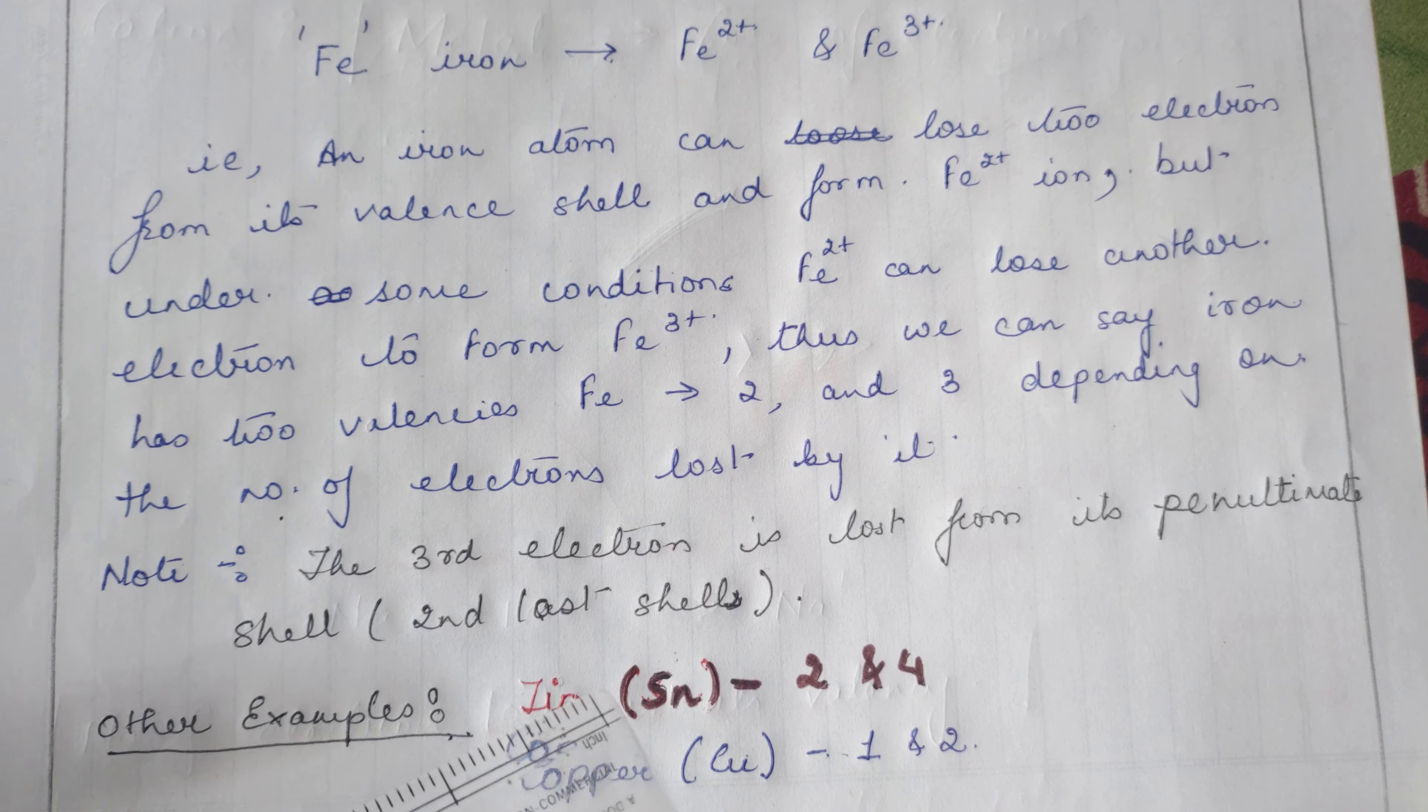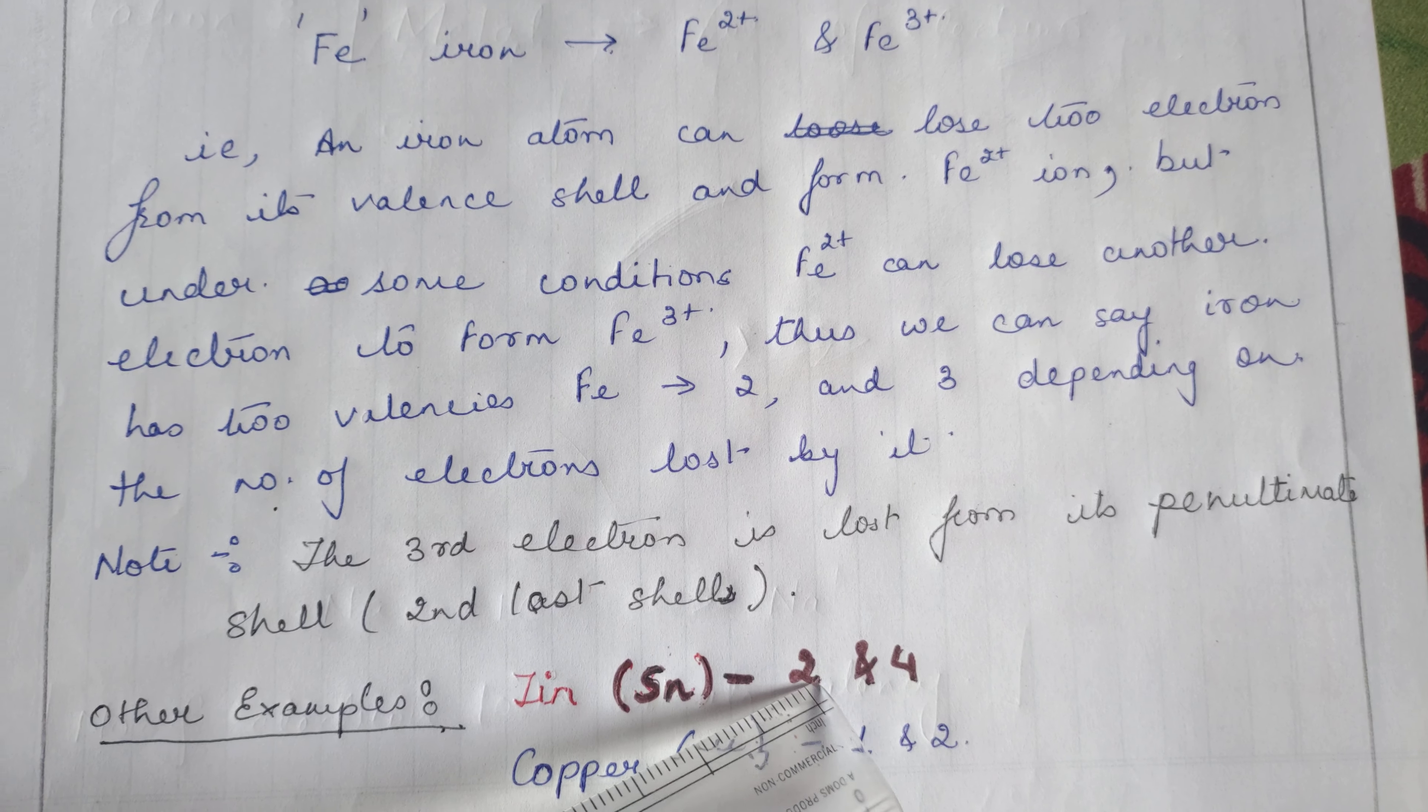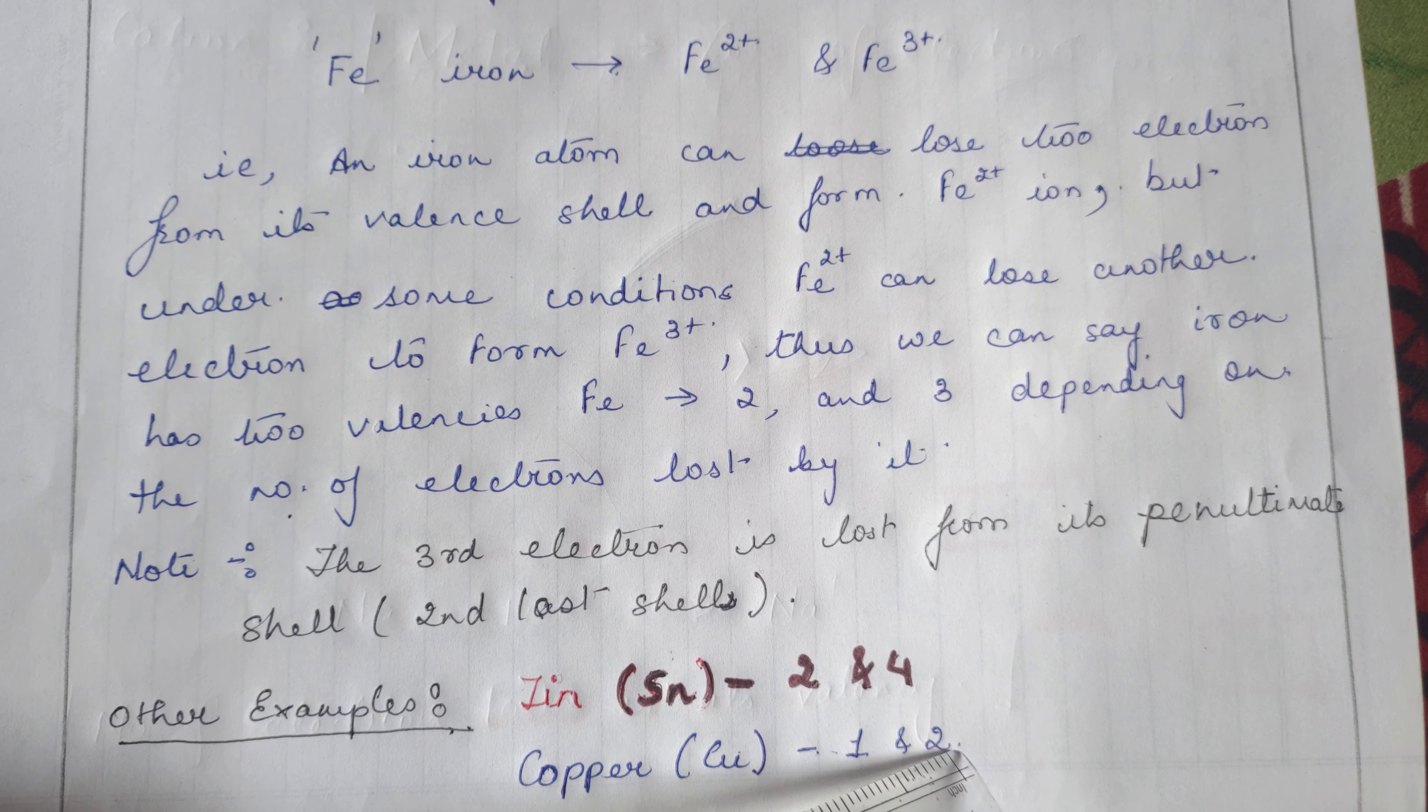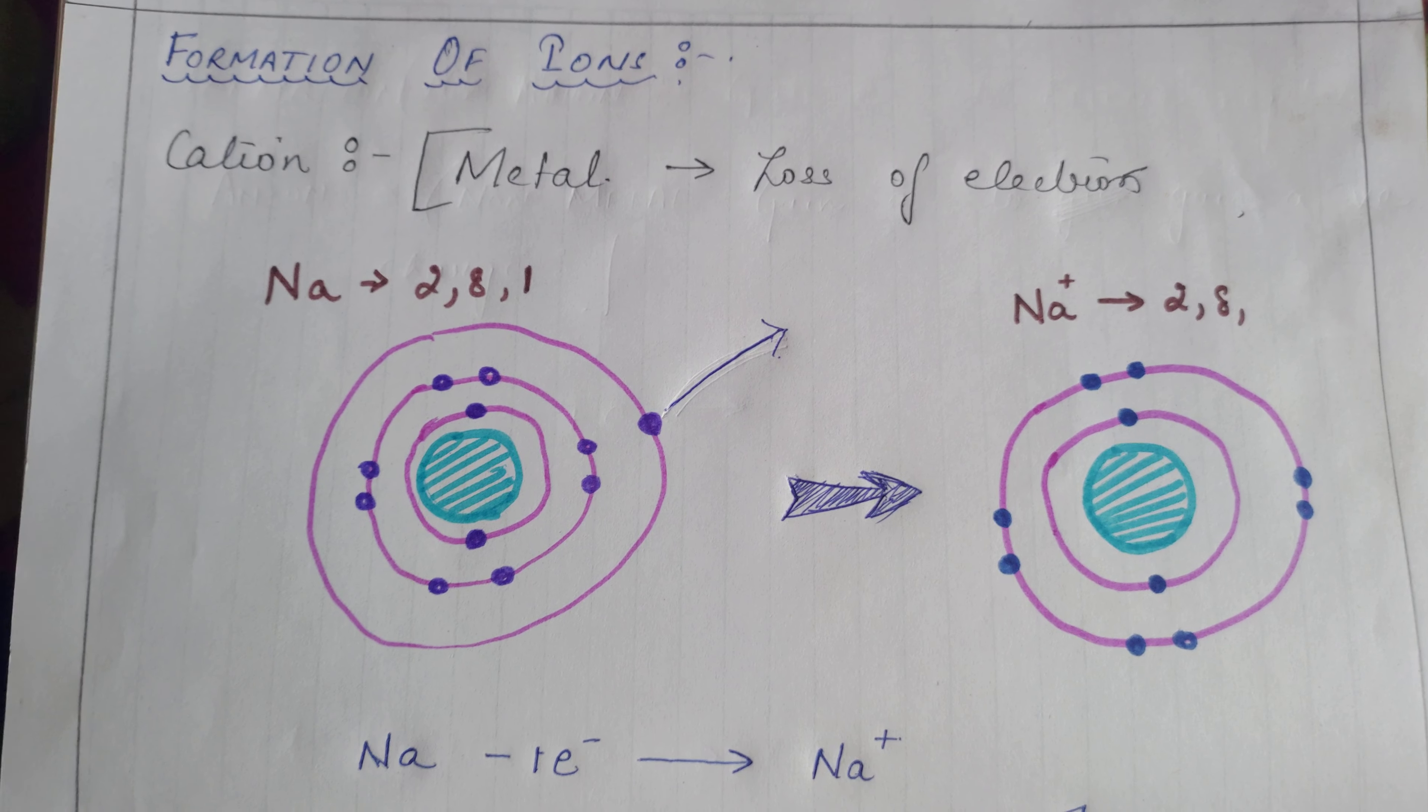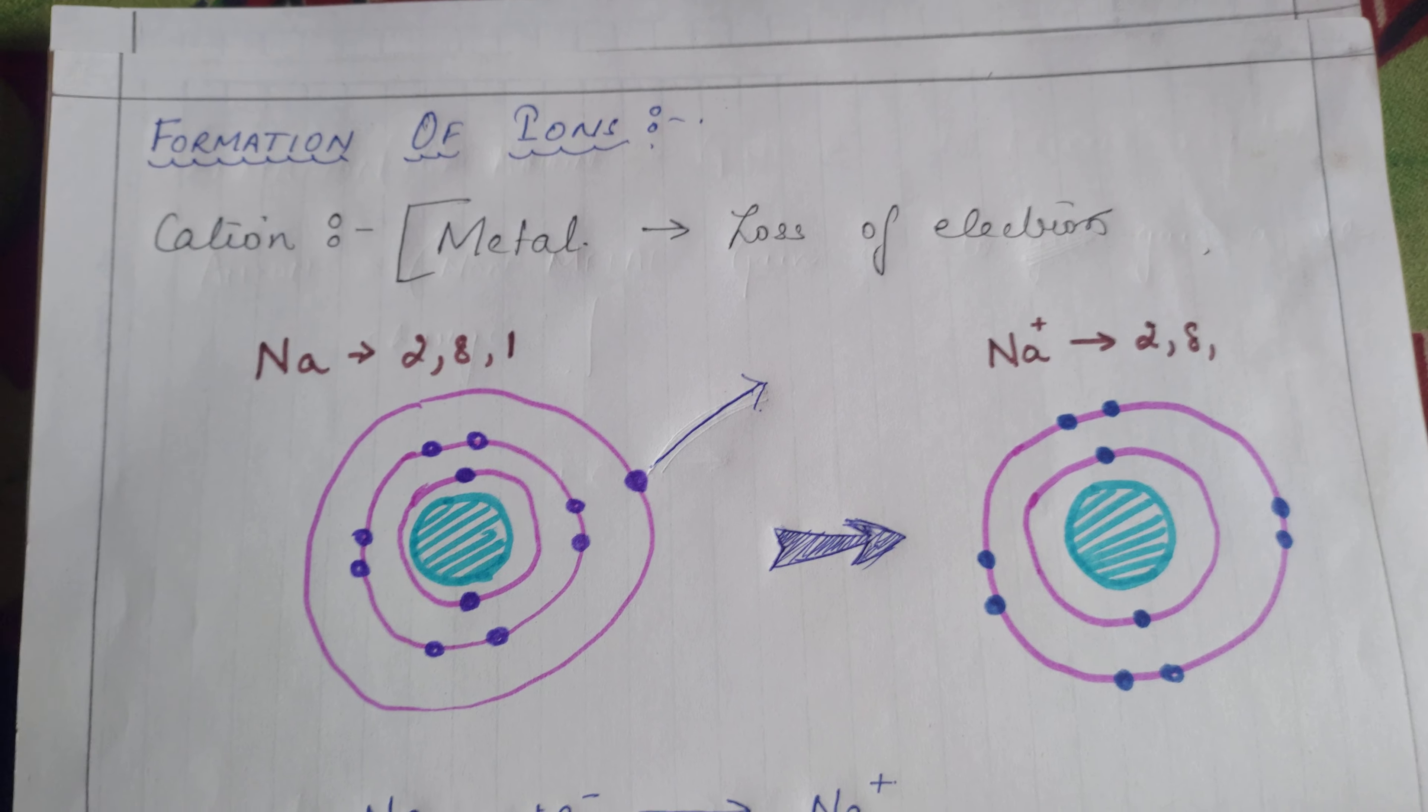You can see over here another example is tin. Tin has two valencies: two and four. Copper has valency one and two.